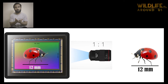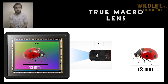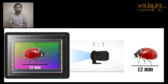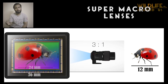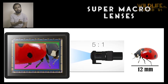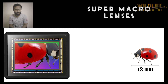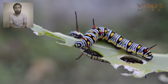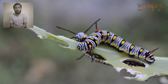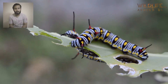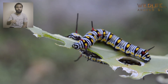A lens that gives us a 1:1 magnification ratio we call a true macro lens. Further increasing the magnification ratio — like 2:1, 3:1, or 4:1 — you will get an even more magnified version of the subject on the sensor. This is all about magnification ratio. If you still have any questions, please write in the comment section and I will definitely get back to you.